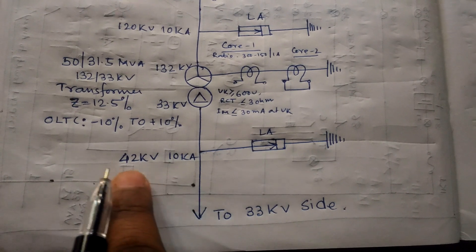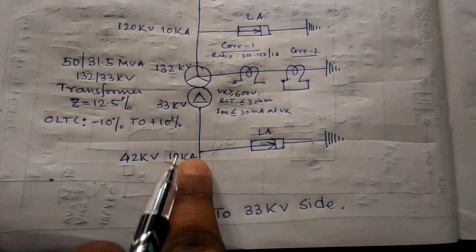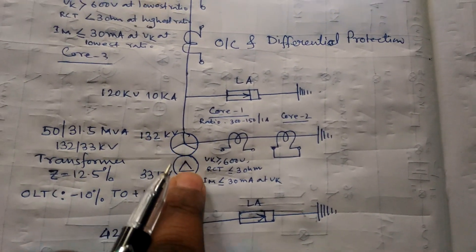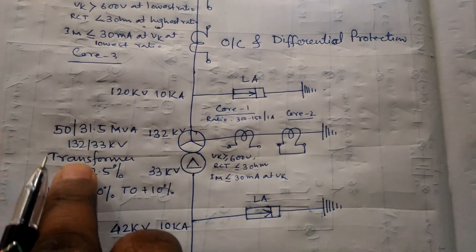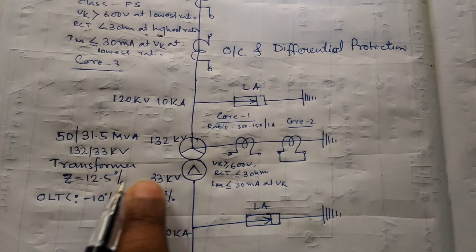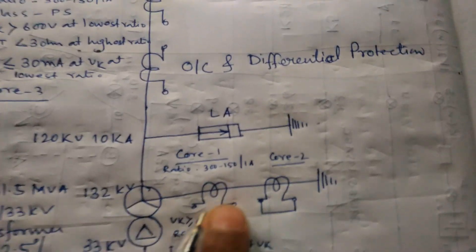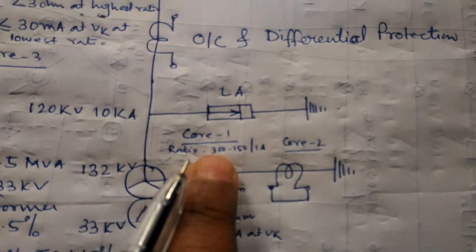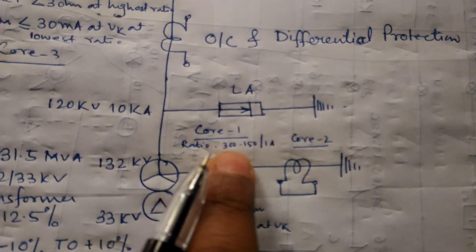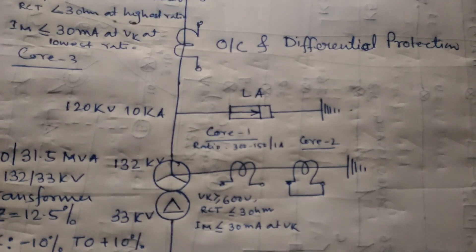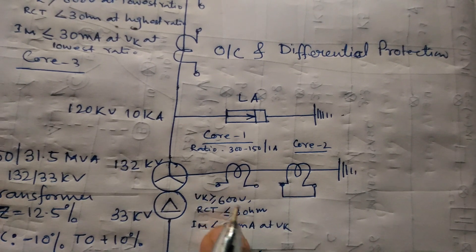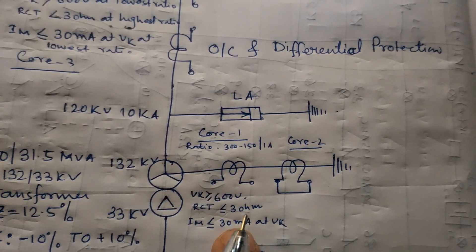On the 132 kV side, 120 kV 10 kA lightning arrestors are used. On the 33 kV side, 42 kV 10 kA lightning arrestors are used. The transformer discussed here is 50 MVA, 132/33 kV, with impedance of 12.5%. The neutral CT used here has the same ratio — 300/150/1 — with 2 cores: one core is shorted and one core is used for REF protection.